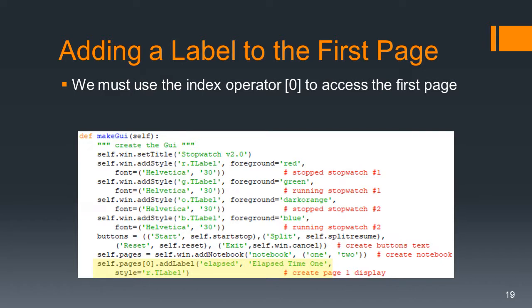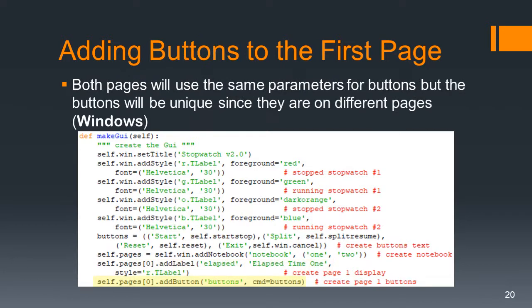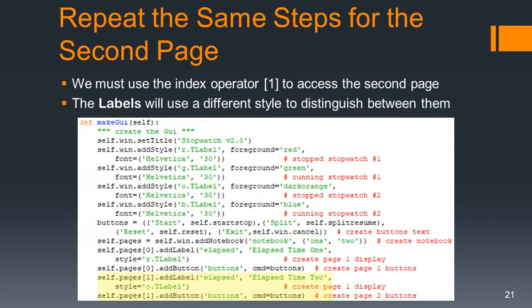Now we're going to put something in the first page. We use self.pages[0] — that is the TK Entertoy window for page zero — and then we use the add_label method. We stick in 'elapsed' with title 'elapsed time one' and style 'r.tlabel', very similar to what we did before. Then we add our buttons: self.pages[0].add_button with tag 'buttons' and the command is buttons, using that tuple from above. We repeat the same steps for the second page.